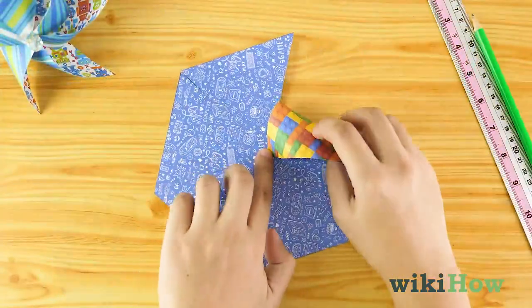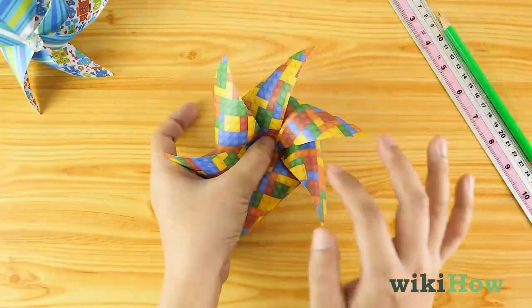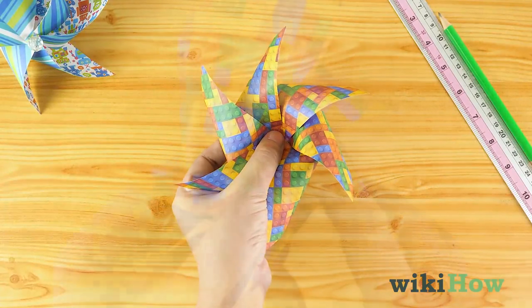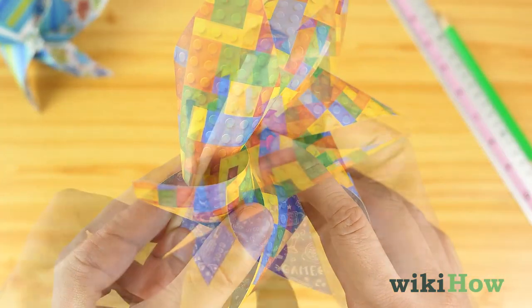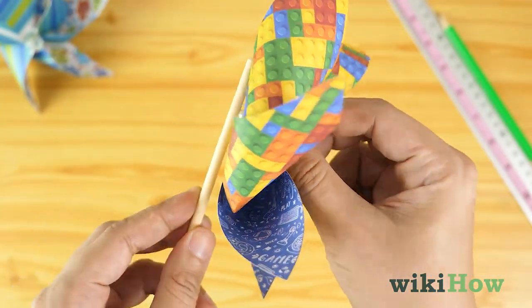Then fold every single corner to the center of the hexagon paper and secure with a pushpin. Finally, attach the pinwheel to the dowel and enjoy.